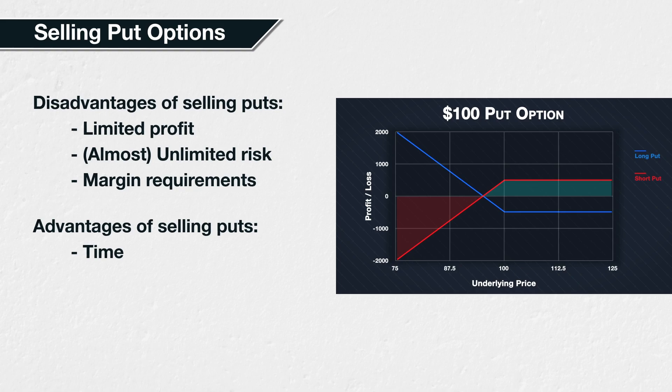That is, until you are comfortable with how the margin system works and what risk is involved with selling options. We mentioned this in the call options section, but it is worth repeating. Selling a naked option means you have sold the option with no other position covering it at all. In other words, there is nothing else in your account hedging that undefined risk. It is possible to turn a short option position into a risk-defined position by adding a long option as well, converting it into a vertical spread. We will cover this later in the course.